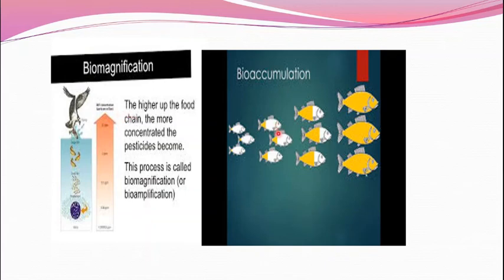Today we have discussed structural components of ecosystem, functional components of an ecosystem — food chain, food web, ecological pyramids, biogeochemical cycles, and biomagnification and bioaccumulation. Thank you.